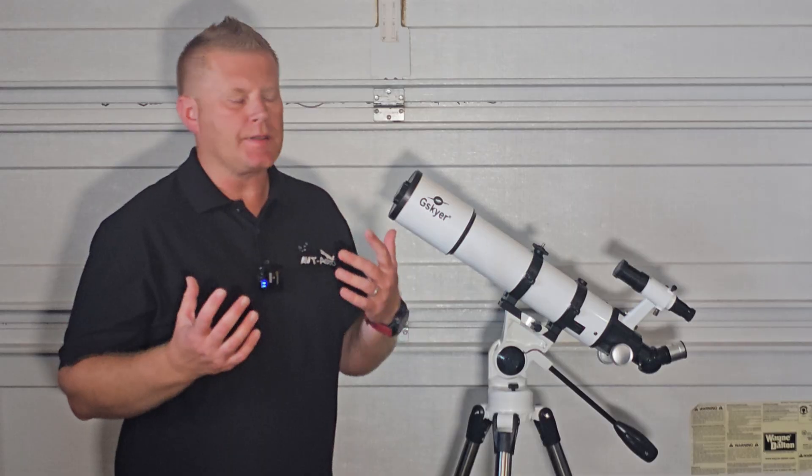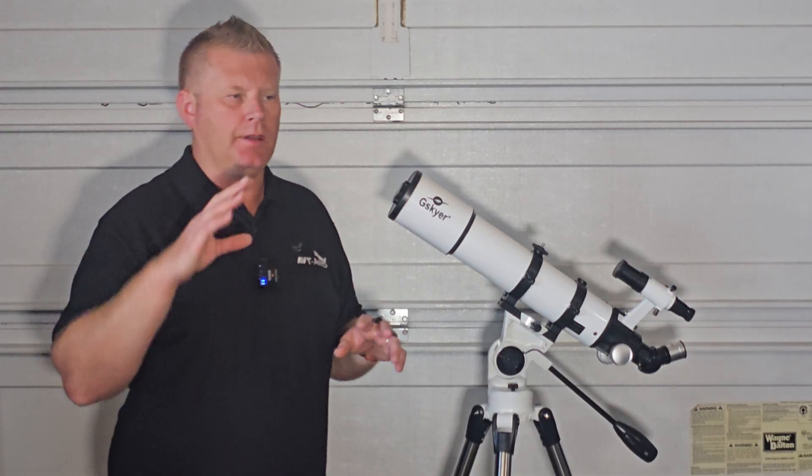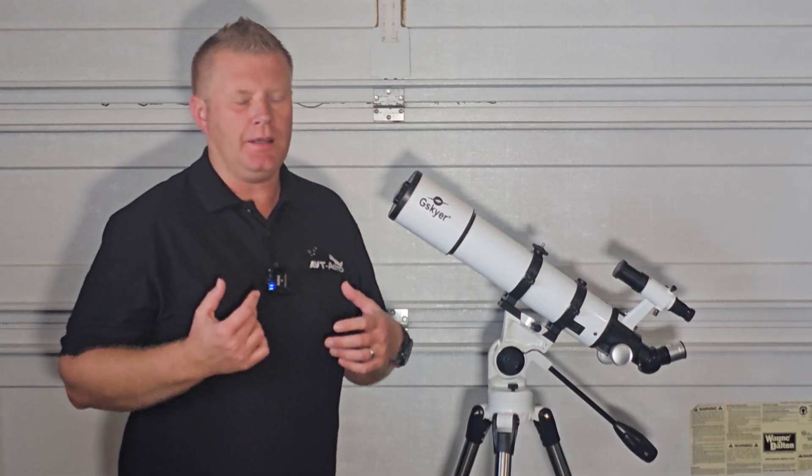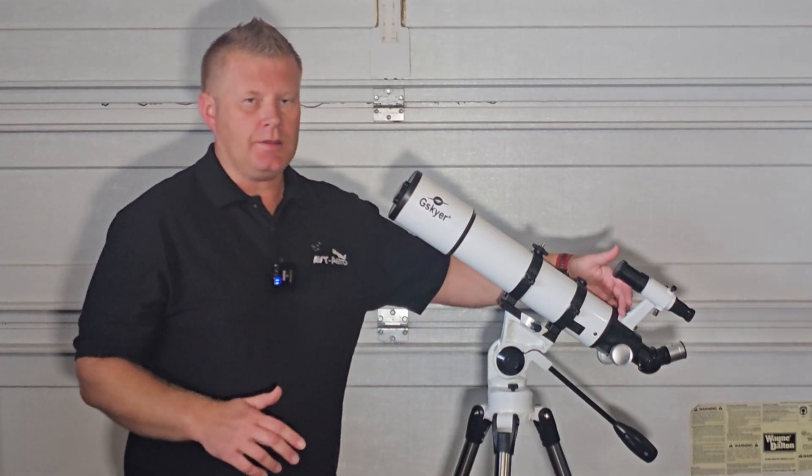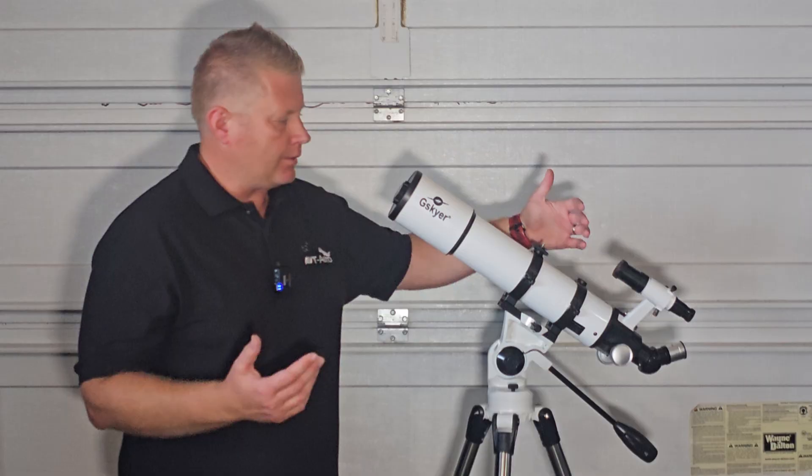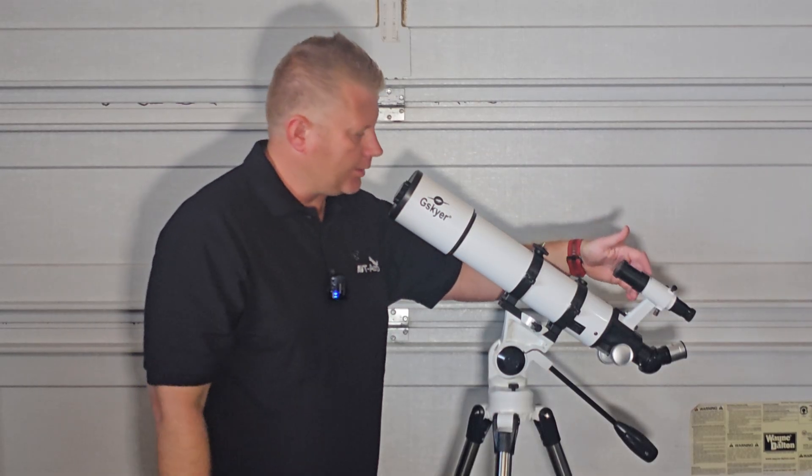All right, now kind of moving on to the optics. Finder scope, I really didn't have any issues with using this thing as far as locating stuff the way that I normally locate it. I personally prefer red dot finders. I'm going to have a link to a red dot, a really inexpensive red dot finder that I use in a lot of my scopes. It'd be very easy to attach that to this telescope. So I personally prefer that. I suggest really to switch it out to that.